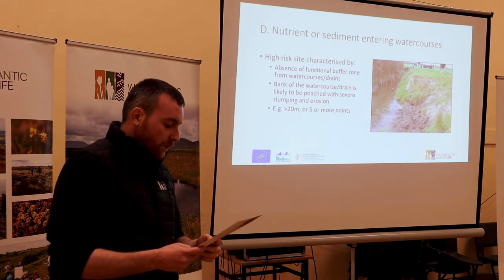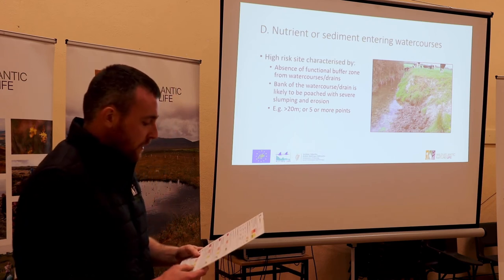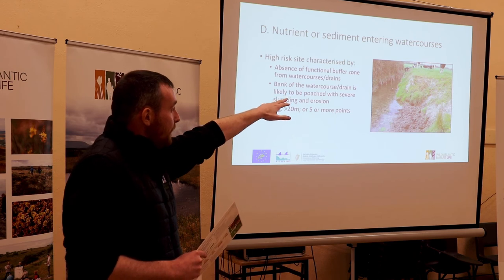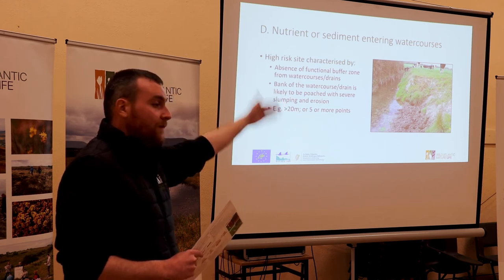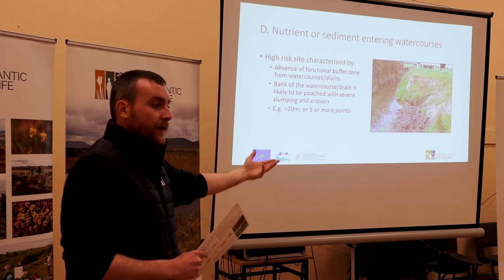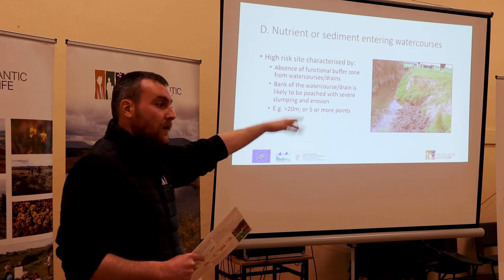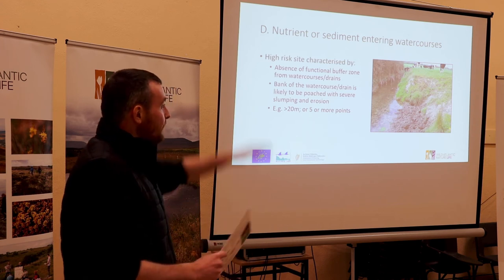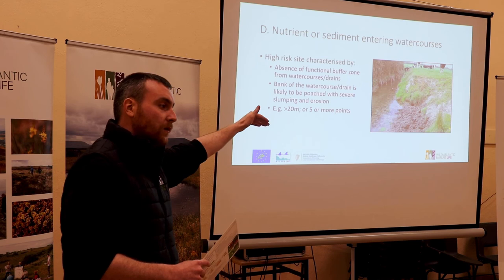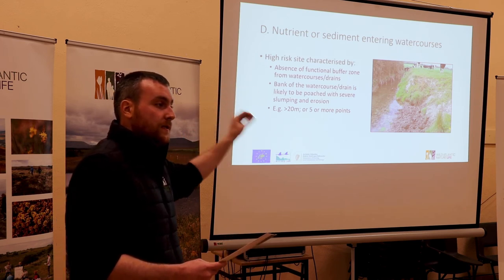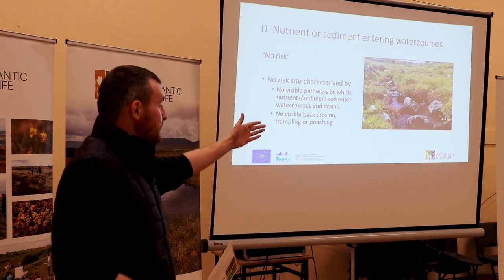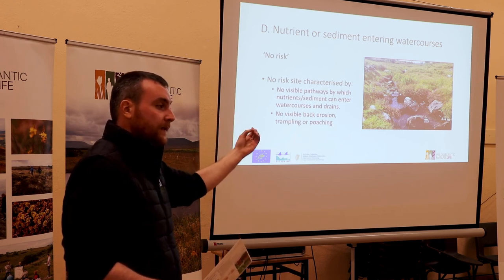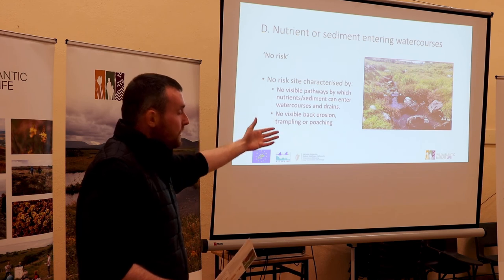Section D asks: what is the level of risk of sediment or nutrients entering the watercourse? A high risk example shows cattle standing in a stream - there will be dung and nutrients entering that watercourse, and the bank has collapsed from where the cattle are going in, so sediment and clay are moving into the watercourse. A no-risk example is where we find no evidence of nutrients or sediment entering the watercourse - there's no reason to assign risk in that scenario.